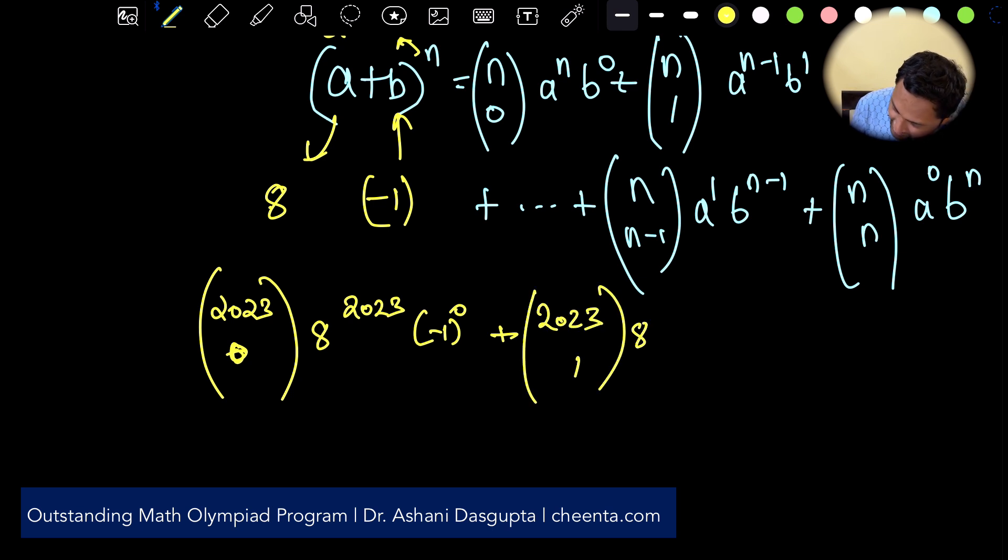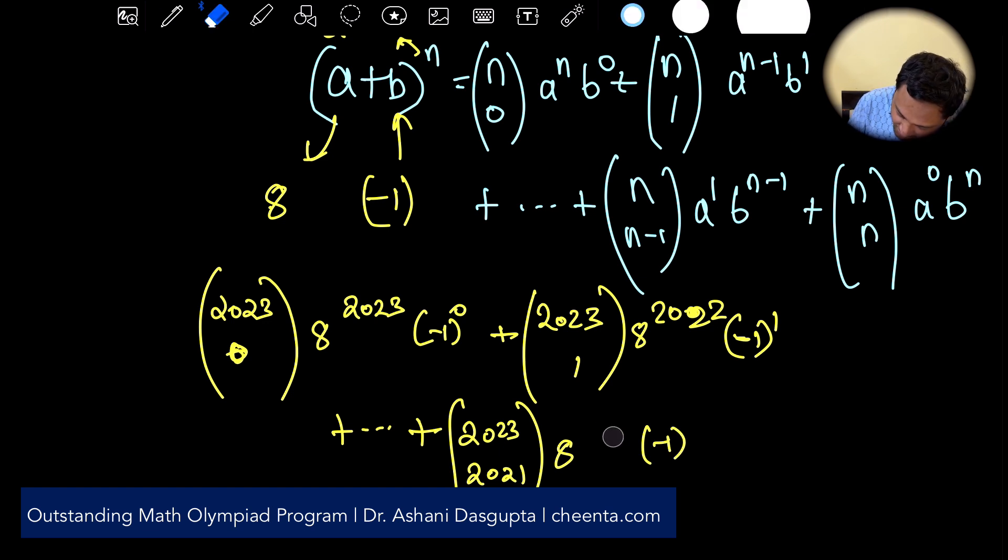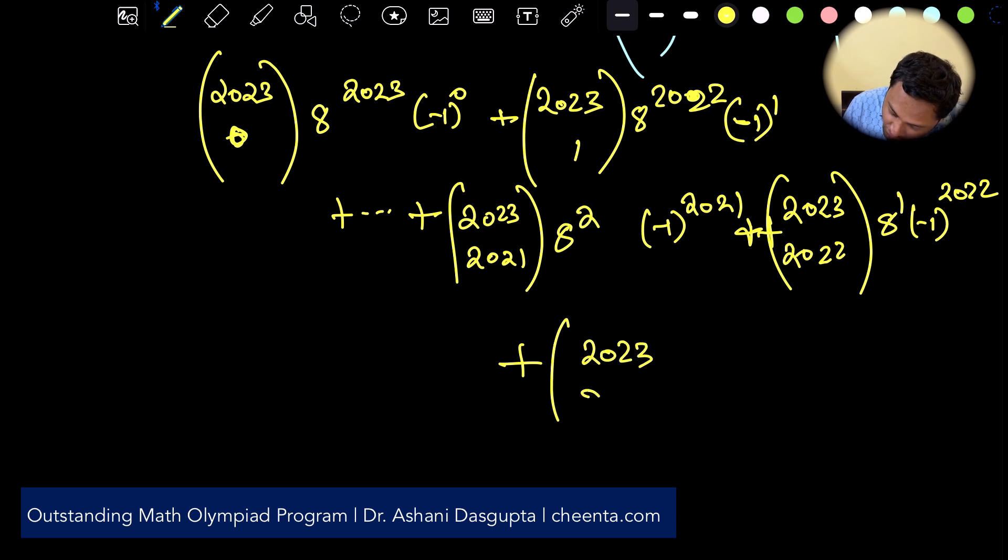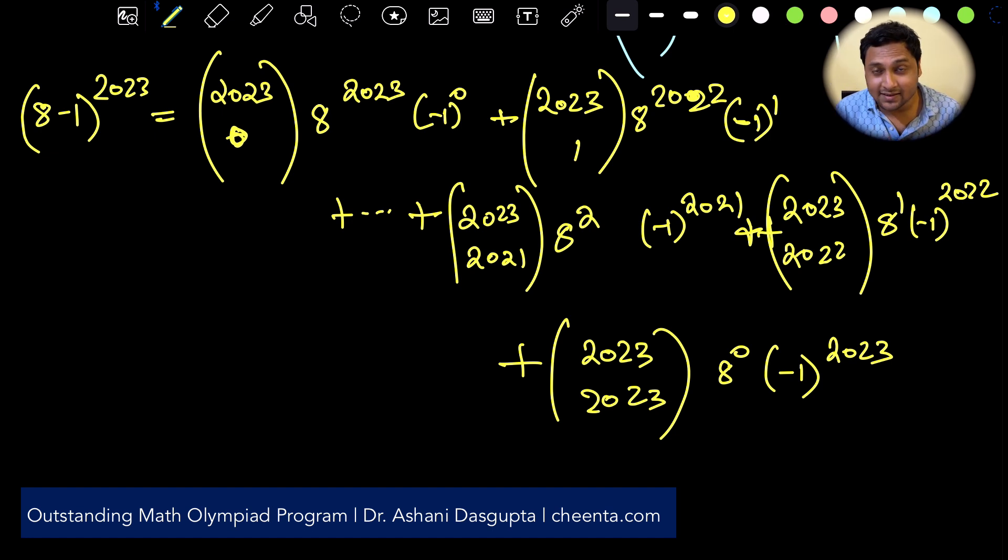So how do we do it? Well the first step, 2023 choose 0, 8 to the power 2023, minus 1 to the power 0, plus 2023 choose 1, 8 to the power 2022, minus 1 to the power 1. Like this it will continue and what we will get is 2023 choose 2021, 8 to the power 2021, minus 1 to the power 2021, plus 2023 choose 2022, 8 to the power 1, minus 1 to the power 2022, and finally the last term of this sequence 2023 choose 2023, 8 to the power 0, minus 1 to the power 2023. This is the binomial expansion of 8 minus 1 raised to the power 2023.